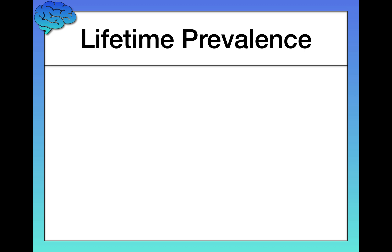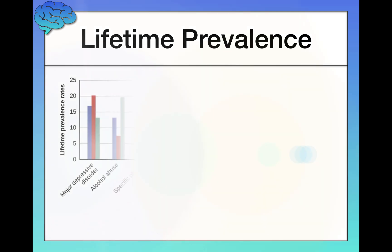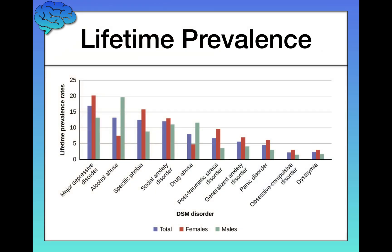A little bit more terminology: the prevalence of a disorder refers to the percentage of people who currently have that disorder at this slice in time. Notice the title of this slide says lifetime prevalence, because this visualization is talking about lifetime prevalence, which is a little different — instead of the percentage of people who currently have the disorder, lifetime prevalence refers to the percentage of people who get a given disorder at some point in their lives.